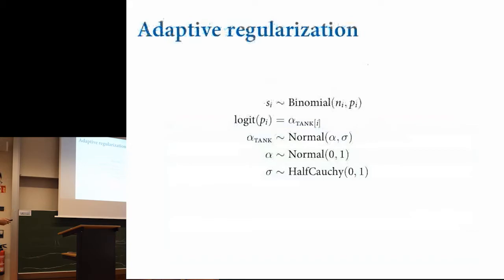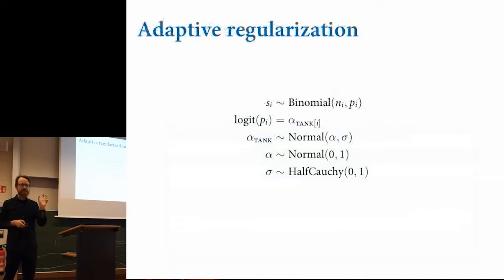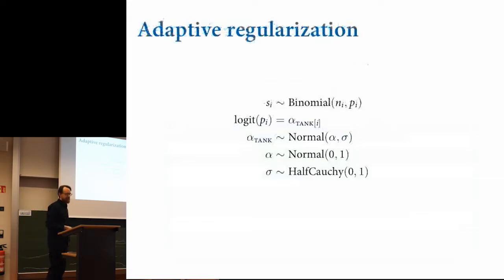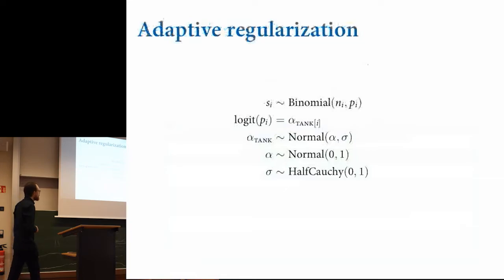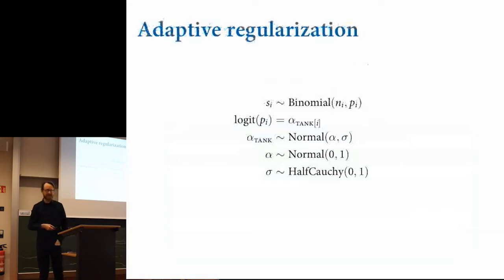Let's fit the multilevel model. The previous model has a fixed normal(0, 5) prior on the intercepts for regularization — it's not adapted because the prior is not learned from the sample. The multilevel model instead has an adaptive prior learned from the data, meaning it has parameters inside of it. Now the alpha_tank parameters are varying intercepts. The model looks very similar, but now the normal distribution isn't (0, 5) — it's normal(alpha, sigma), which are two new parameters we have to learn. Alpha is the average survival rate across tanks, and sigma is the standard deviation on the log-odds scale across tanks. So normal(alpha, sigma) is the distribution of tank survival probabilities on the log-odds scale. Alpha gets a normal(0, 1) prior, and sigma gets its own prior just below.